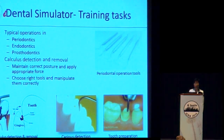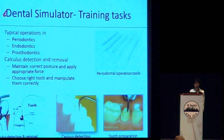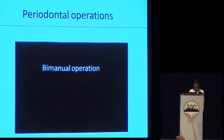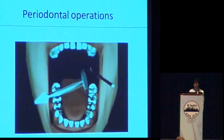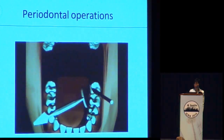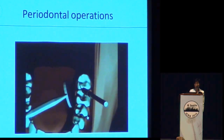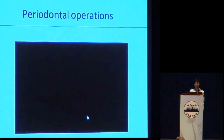For example, in periodontics, one typical procedure is calculus detection and removal. A student can use the simulator to practice skills on how to maintain correct posture and apply appropriate force, and how to choose the right tools and manipulate them correctly. This video shows a bi-manual operation: for calculus deeply inside the oral cavity, it's very hard to reach the target, so students must practice coordinating the motion of the two hands using a mirror.